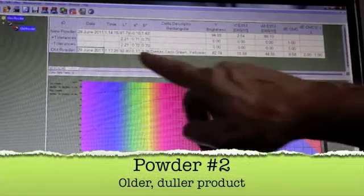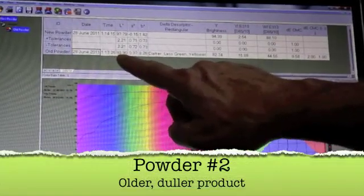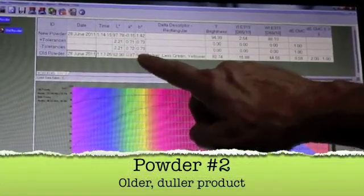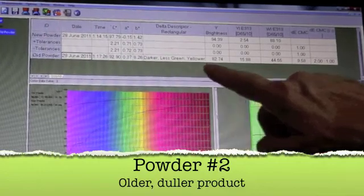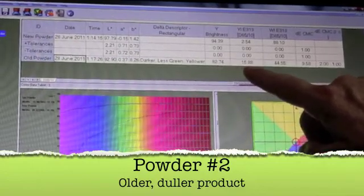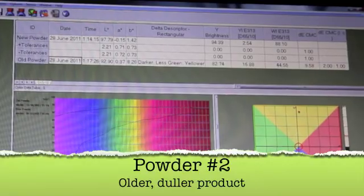And our second product is much darker, with the lightness values dropping, the B value increasing, which is our yellowness. Our brightness has dropped, our yellowness has increased, and the product is much less white.